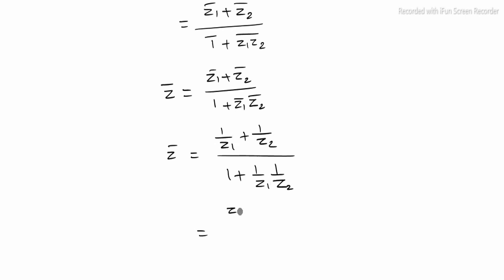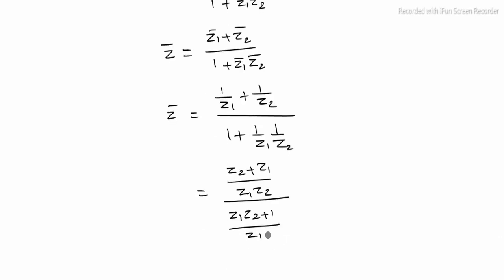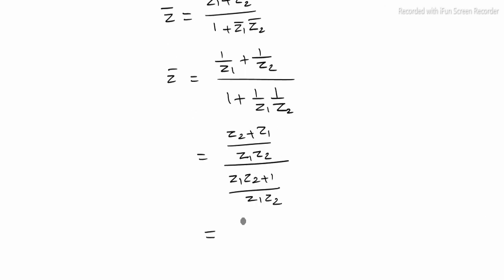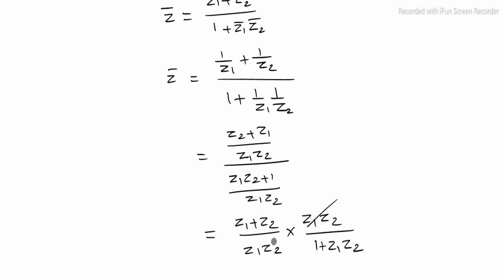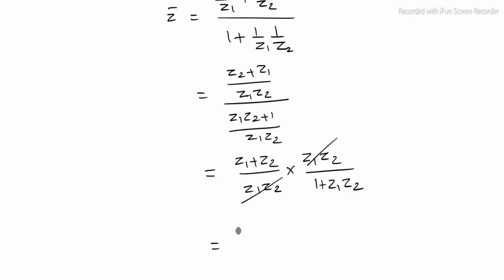The numerator is 1 by z1 plus 1 by z2, which equals z2 plus z1 divided by z1 z2. The denominator is 1 plus 1 by z1 z2, which equals z1 z2 plus 1 divided by z1 z2. So z bar equals z1 plus z2 over z1 z2, divided by 1 plus z1 z2 over z1 z2. The z1 z2 terms cancel, leaving z bar equal to z1 plus z2 divided by 1 plus z1 z2, which is z itself.